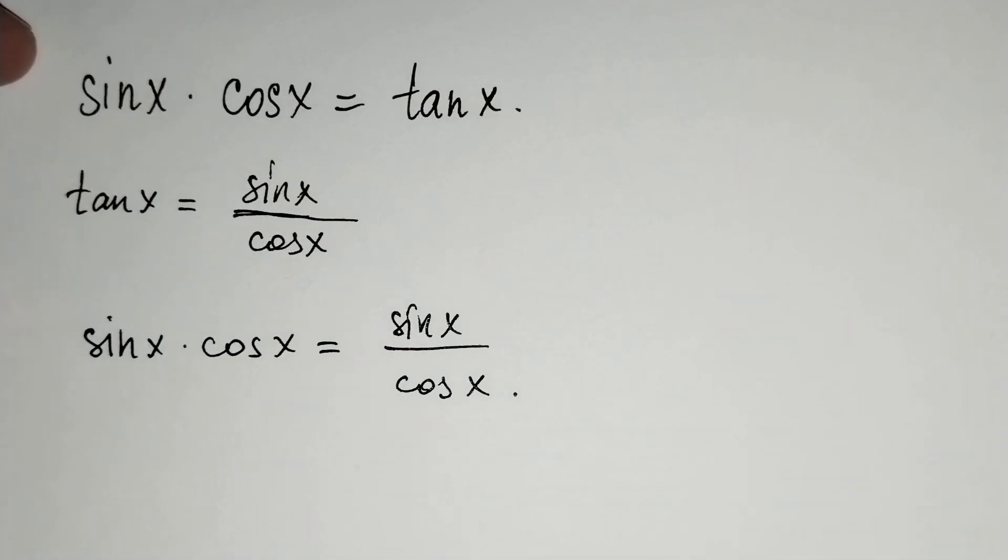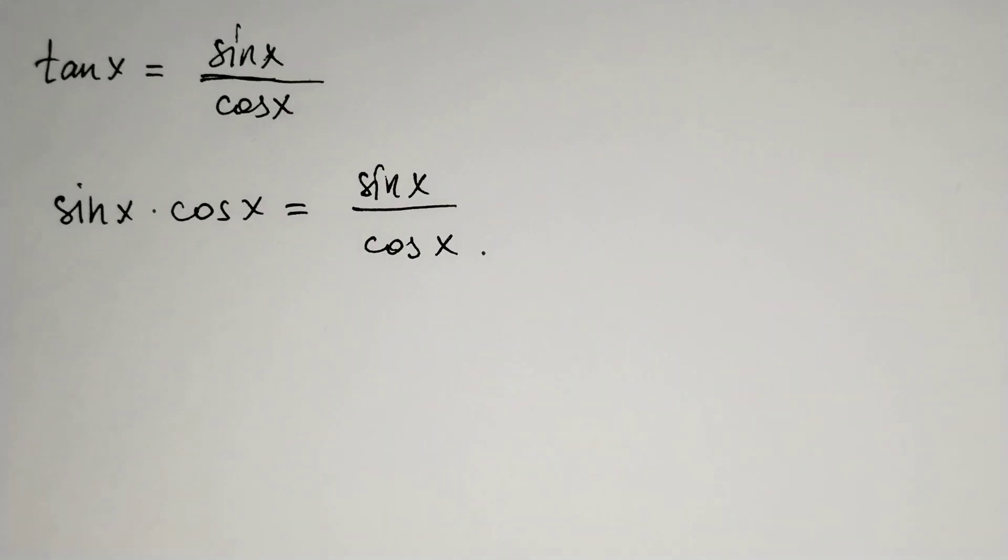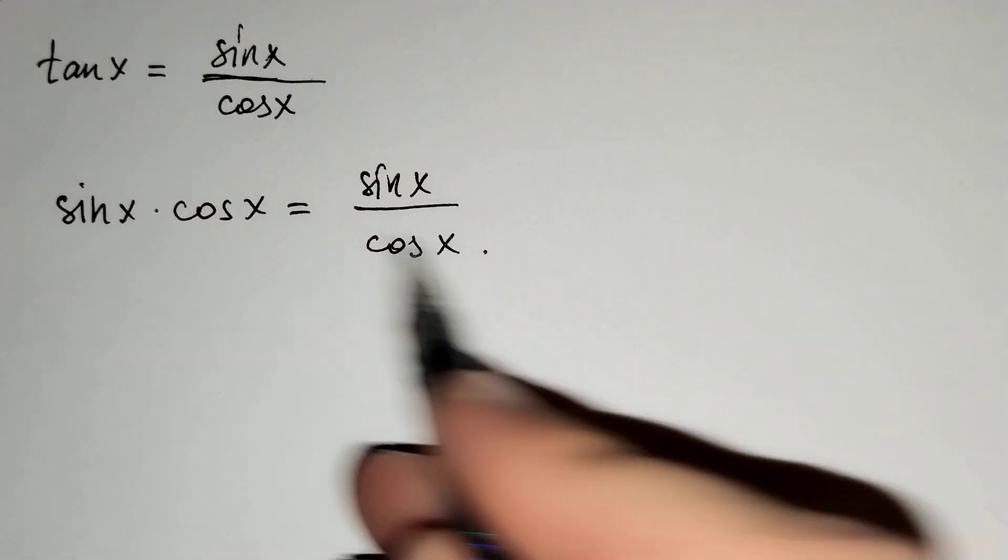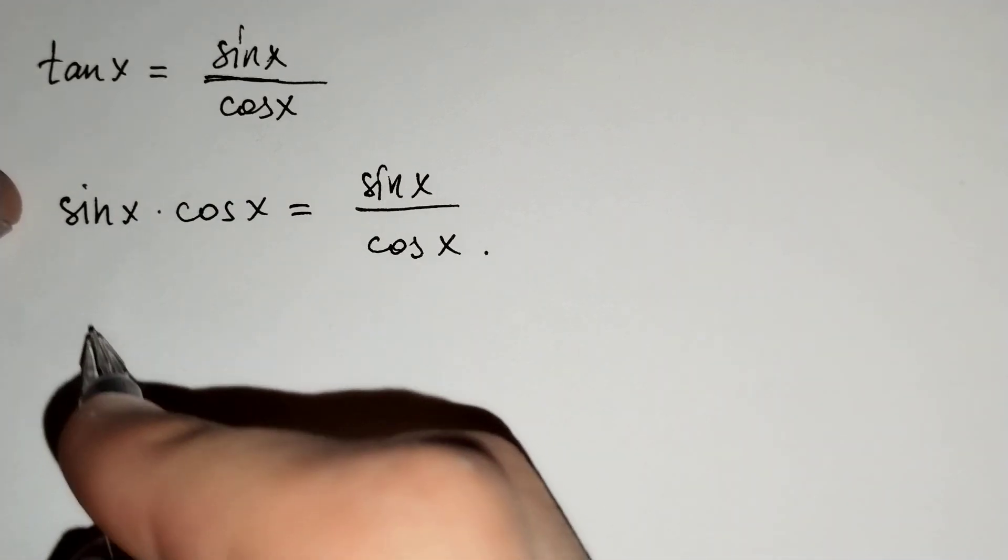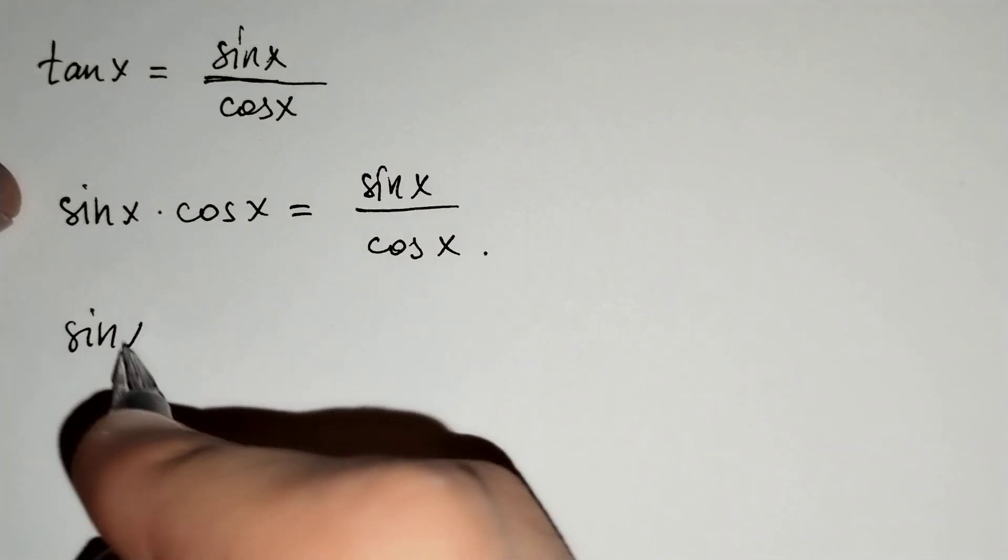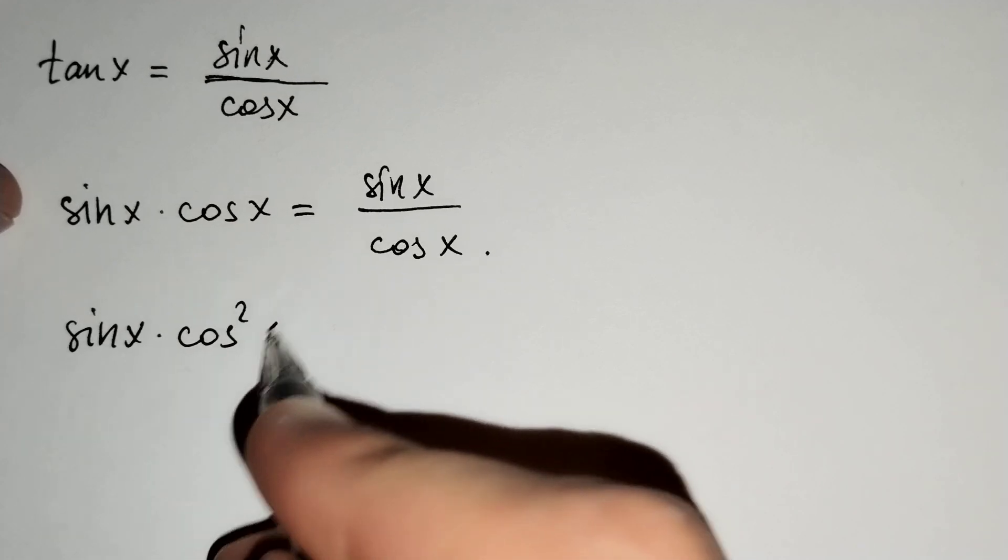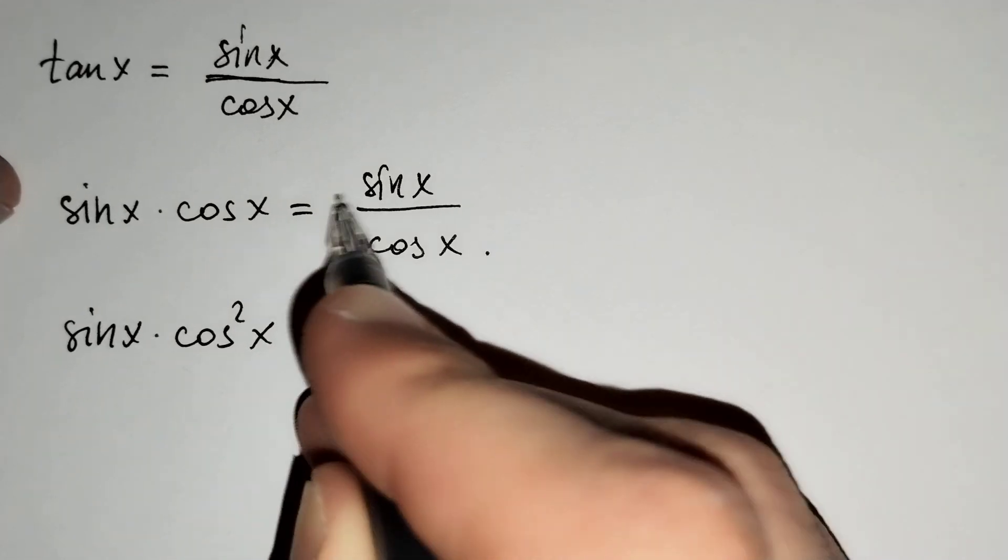Then, if we multiply both sides of our equation by cosine x, we get sin x times cosine squared x equals sin x.